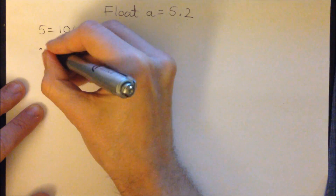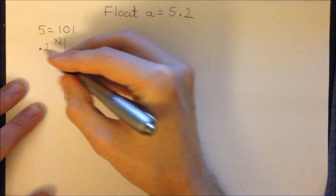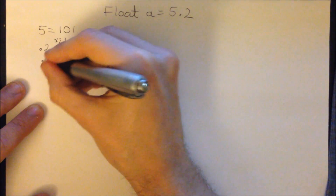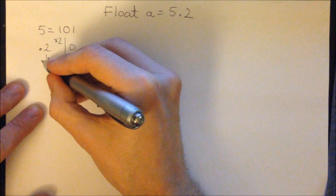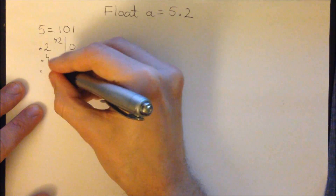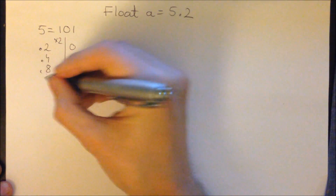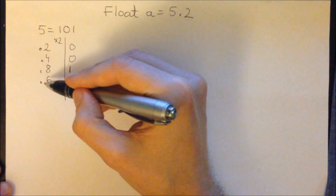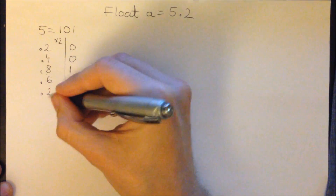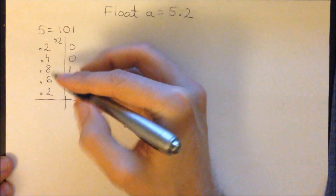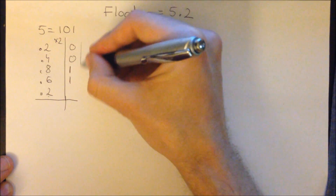For 0.2, we convert to binary by multiplying by 2. 0.2 times 2 is 0.4 (write 0). 0.4 times 2 is 0.8 (write 0). 0.8 times 2 is 1.6 (write 1). 0.6 times 2 is 1.2 (write 1). Now we see that we came back to 0.2, which means we will repeat the pattern.